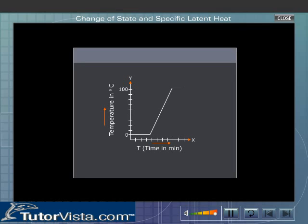The graph shown here represents the changes taking place when ice at 0 degrees centigrade is heated.